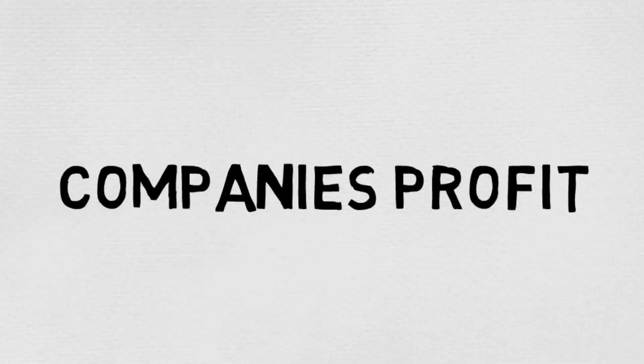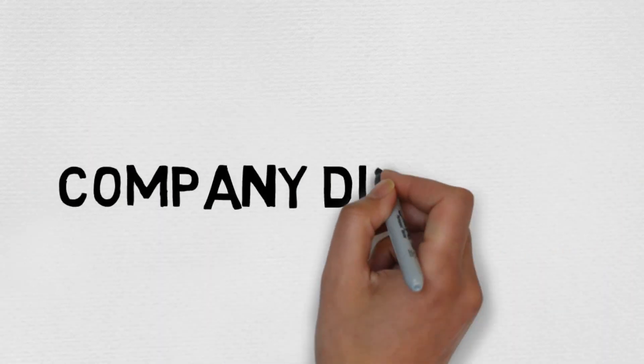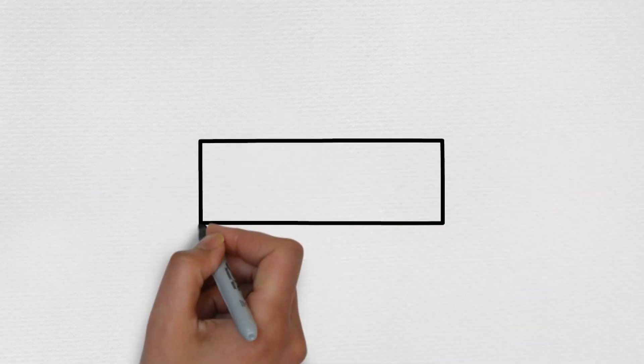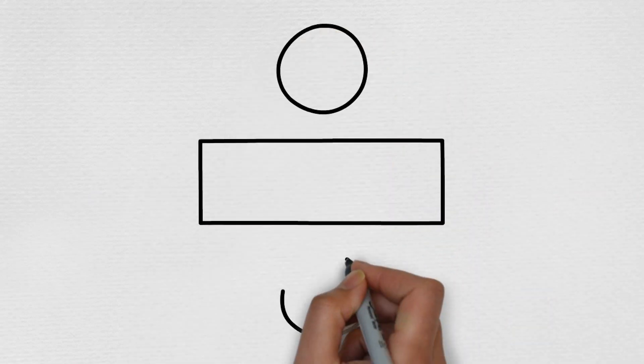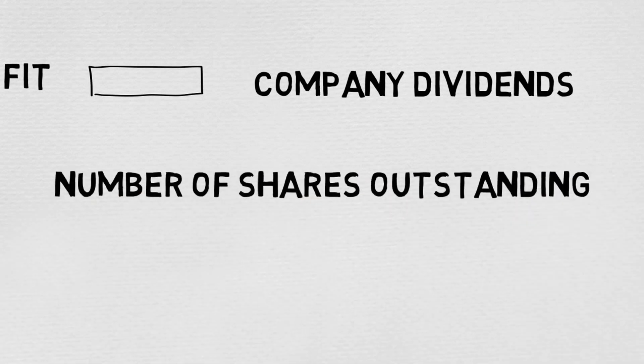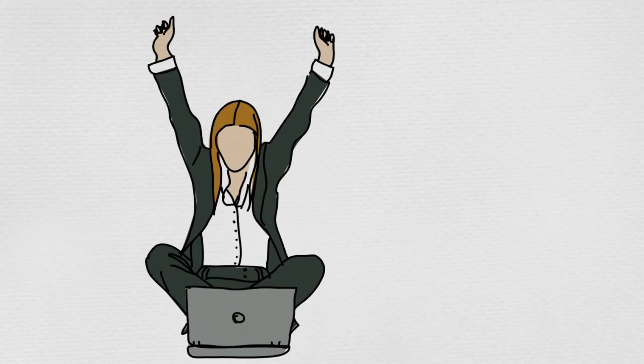Let's say Naomi has some money to invest and she's deciding between two companies. She's looking at Gens.com, which sells autos online. They have a million dollars in profit minus $100,000 in dividends, divided by 100,000 outstanding shares. So her EPS is $9.